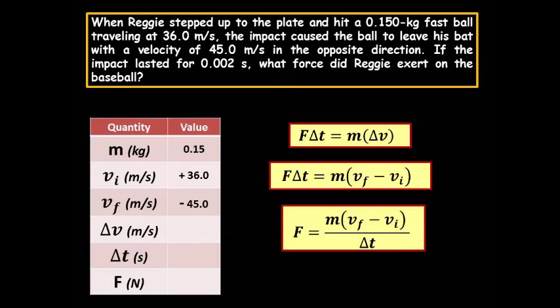Also notice, very, very important, probably one of the more confusing aspects of this problem, that v final is negative 45. Always remember this, the initial motion is always positive. So that when he hits the ball in the opposite direction, that would be negative.